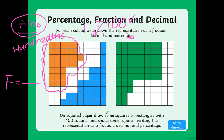Counting: 5, 10, 15, 20, 21, 22, 23, 24, 25, 26, 27, 28, 29, 30. That's right — 30. So the fraction will be 30 over 100.